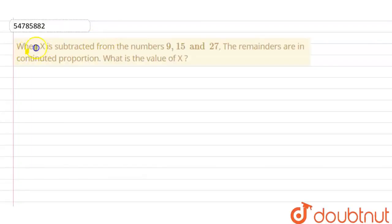Hello guys, question is: when x is subtracted from the numbers 9, 15 and 27, the remainders are in continued proportion. What is the value of x? So you have 3 numbers: 9, 15 and 27.